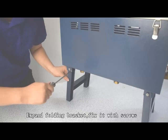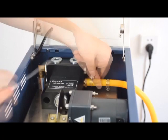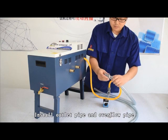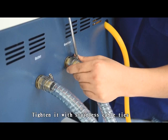Install mixture inlet pipe and tighten it with stainless cable tie. Install outlet pad and overflow pad, then tighten with stainless cable tie.